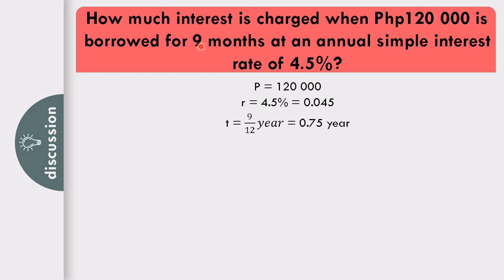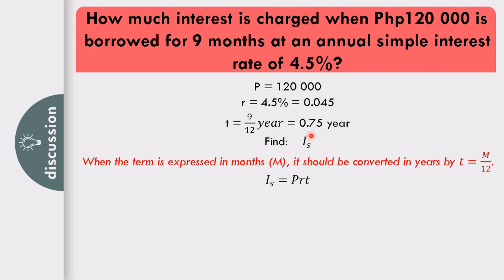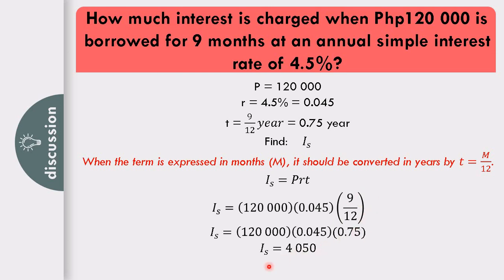Using the formula I sub S equals PRT, substitute the values: 120,000 times 0.045 times 9 over 12. Simplifying, I sub S equals P4,050. Therefore, the simple interest charged is P4,050.